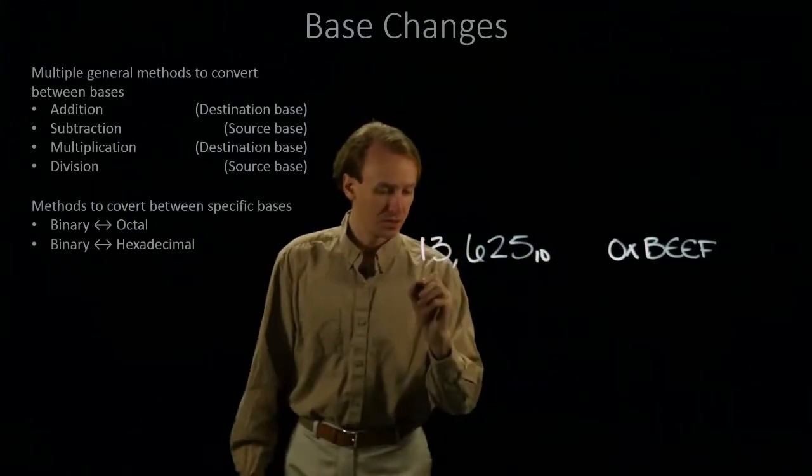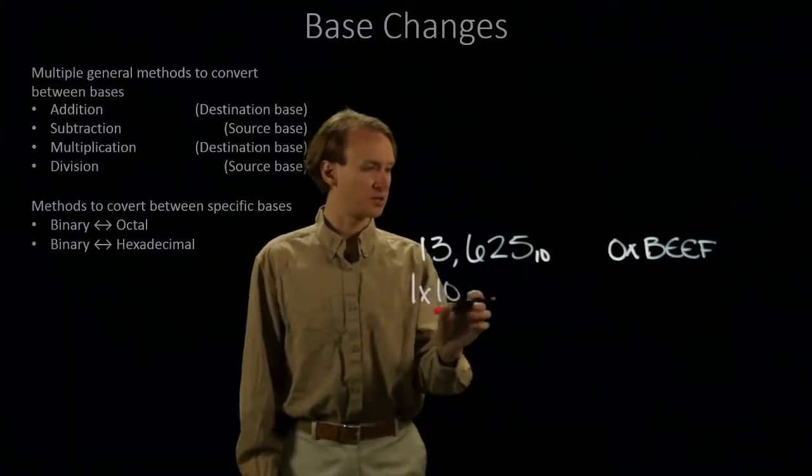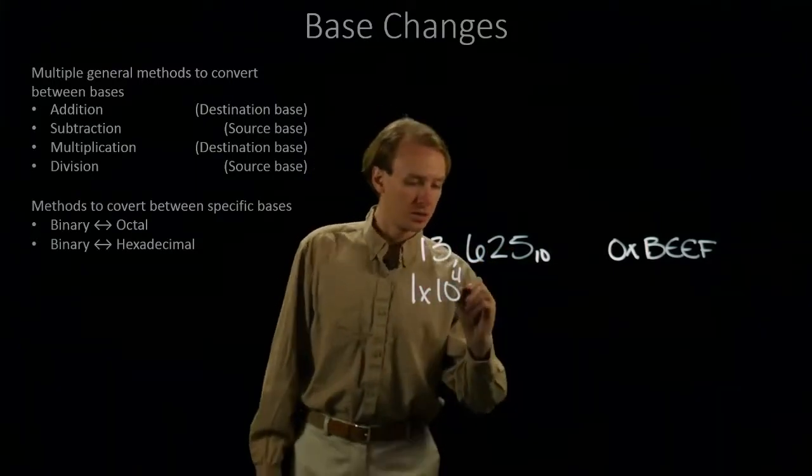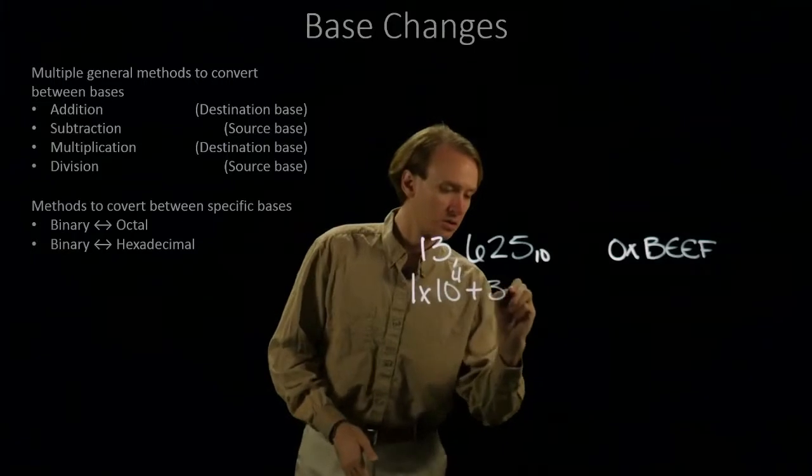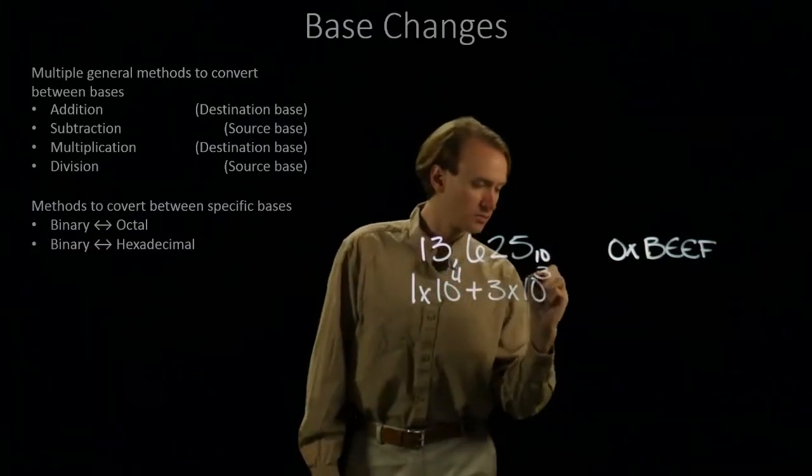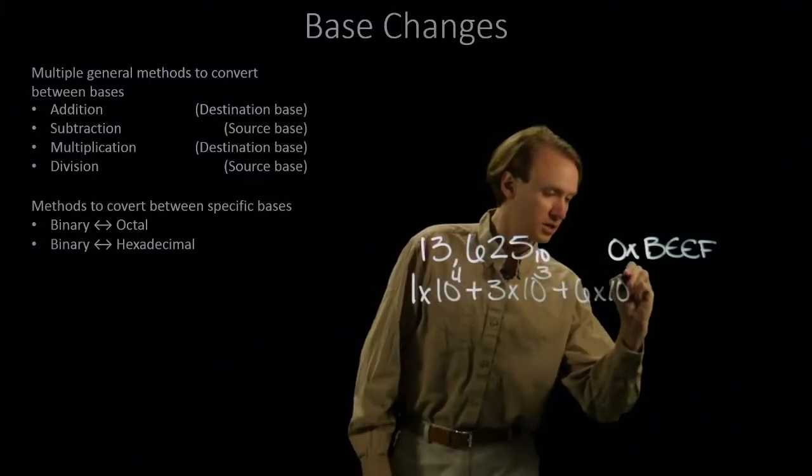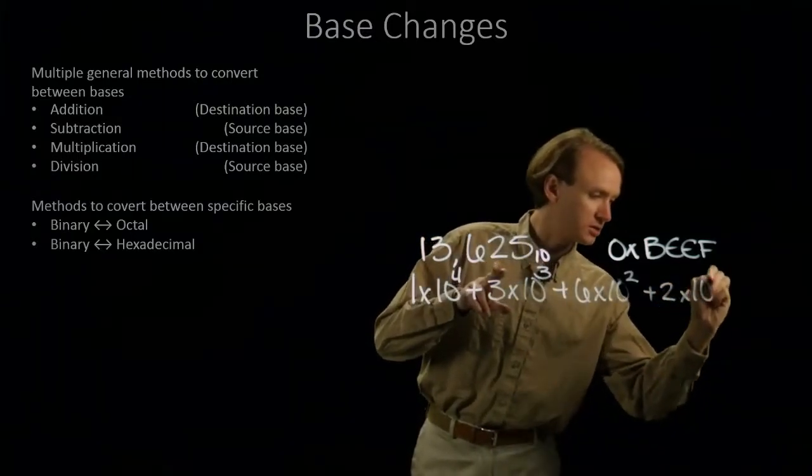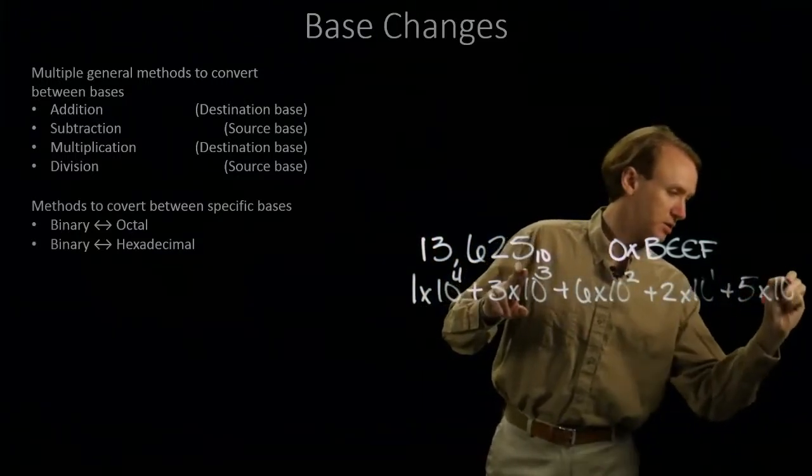So, I'll start by working from left to right. I have a 1 in my first position. And this is times 10 to the 0, 1, 2, 3, 4th. And then I'll look at my second position. So, I've got 3 times 10 to the 0, 1, 2, 3rd position. And then I have 6 times 10 squared, plus 2 times 10 to the 1st, plus 5 times 10 to the 0th.